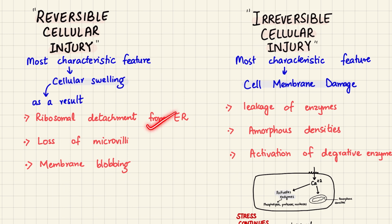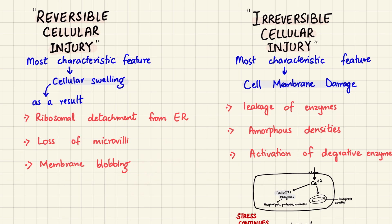This swelling leads to several changes: ribosomes will detach from the endoplasmic reticulum, the cell's microvilli will be lost, and the cell membrane will form small protrusions called blebs — membrane blebs. While these changes sound alarming, they're not permanent, and if the stress is removed in time the cell can go back to normal.